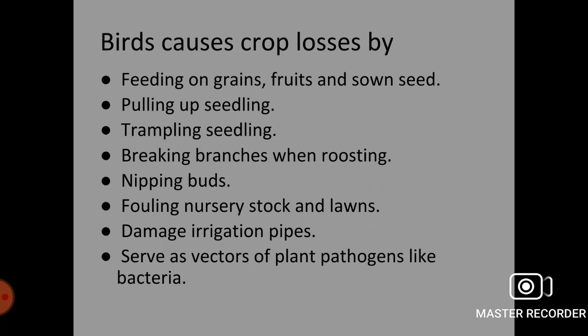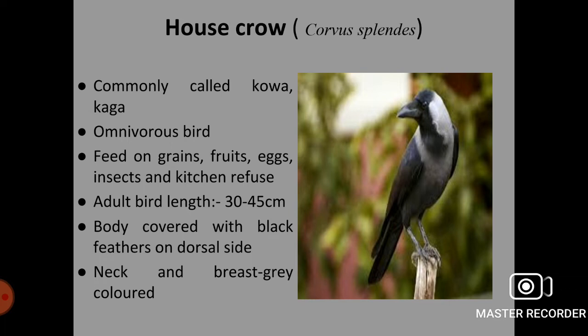The first pestiferous bird is the house crow, Corvus splendens, commonly called Kauwa or Kaga. It is an omnivorous bird feeding on grains, fruits, eggs, insects and kitchen refuse. Adult bird length is 30 to 45 cm. The body is covered with black feathers on the dorsal side, with greyish colour on neck and breast area.